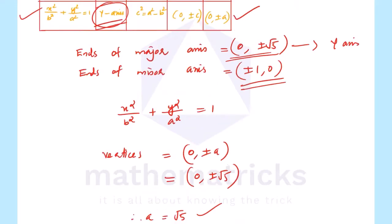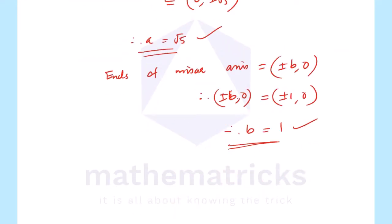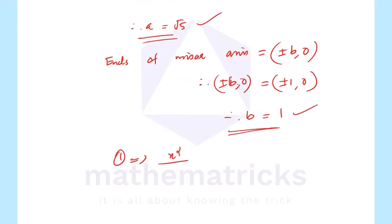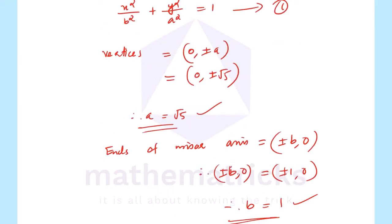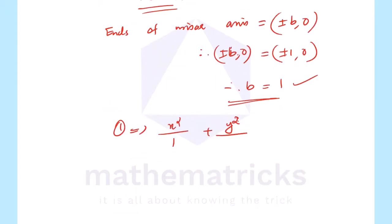Now a = √5 and b = 1. The equation is x²/b² + y²/a² = 1, which gives x²/1 + y²/5 = 1. This is the equation of the ellipse.